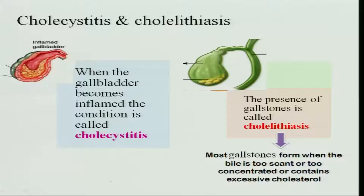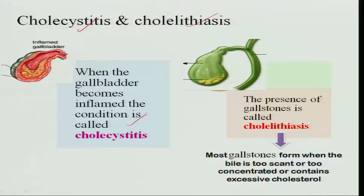The disorders of the gallbladder are cholecystitis and cholelithiasis. Cholecystitis is the inflammation of the gallbladder, and cholelithiasis refers to stones formed in the gallbladder. When the gallbladder gets inflamed it is called cholecystitis, and when there are stones in the gallbladder it is called cholelithiasis. Most gallstones are formed from bile that is too scanty or too concentrated, containing excessive cholesterol.